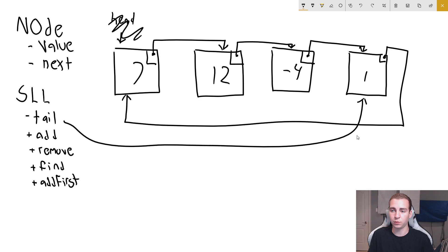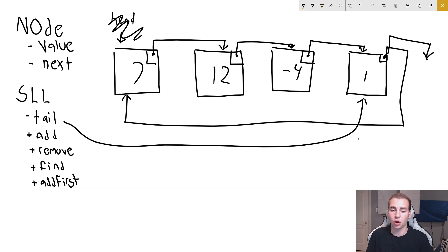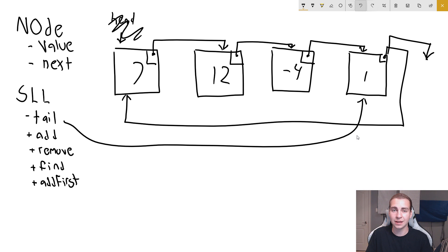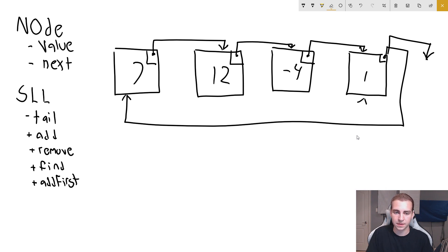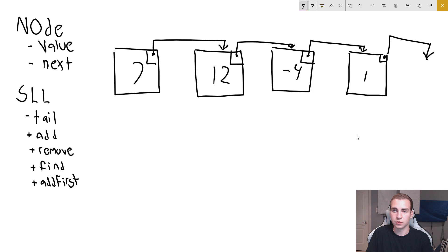Previously, if we wanted to add something to the end of our list, we would need to traverse the entire list to be able to do that, which would take O(n) time. But now if we have reference to this tail node, and since it points back to the head node, if I want to add something at the beginning, all I need to do is change a few pointers. So this here is called the head of our list, and this is the node we're currently storing in SLL.